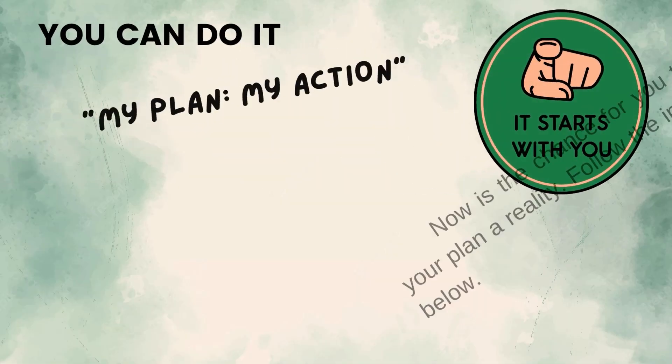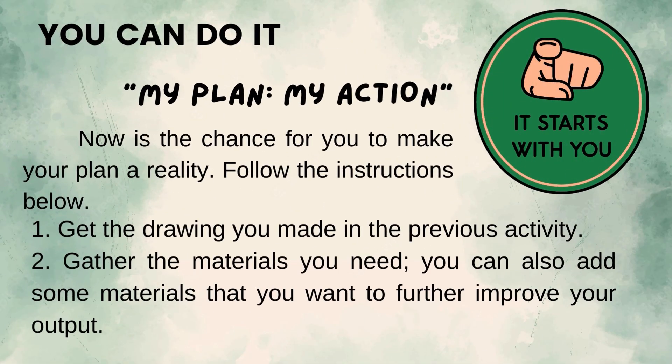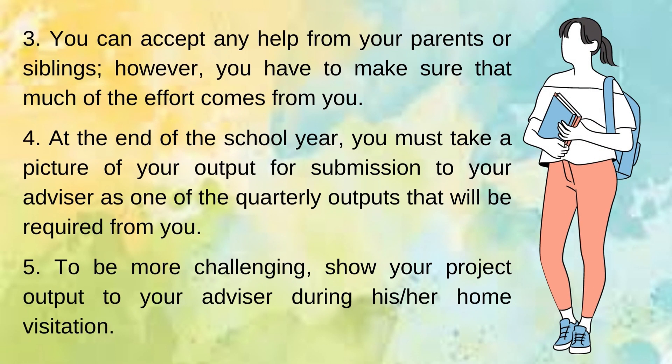You can do it — entitled My Plan, My Action. Now is the chance for you to make your plan a reality. Follow the instructions below: 1. Get the drawing you made in the previous activity. 2. Gather the materials you need; you can also add some materials that you want to further improve your output. 3. You can accept any help from your parents or siblings; however, you have to make sure that much of the effort comes from you. 4. At the end of the school year, you must take a picture of your output for submission to your advisor as one of the quarterly outputs that will be required from you.